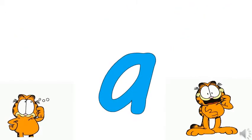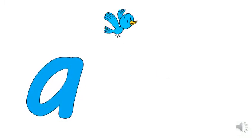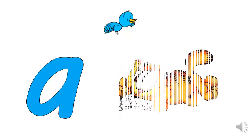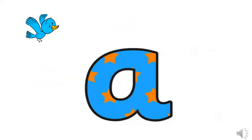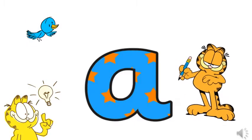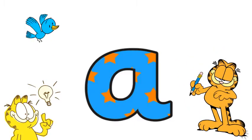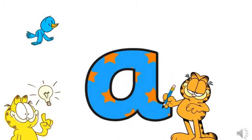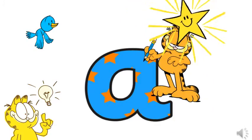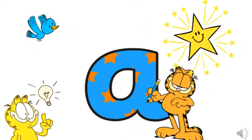Do you know what letter is this? Excellent! This is the small or lowercase letter A. Okay kids, are you ready to write the small letter A? That's great! Please get your piece of paper and your pencil and write with me. Now let's start — how to write the small letter A: circle, line down. Can you do it? Excellent! Circle, line down.